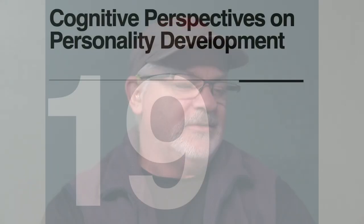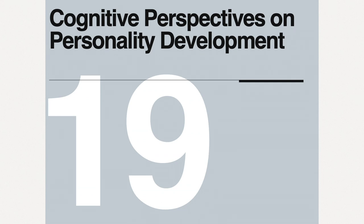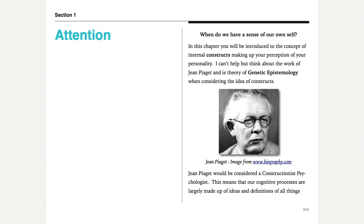Hello and welcome to our last week here together in the psychology of personality, week 15. We're going to be covering our last two chapters, chapters 19 and 20. Chapter 19 is about the cognitive perspectives on personality development, and I get right into one of my favorite theorists, Jean Piaget.